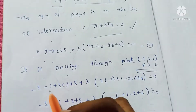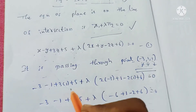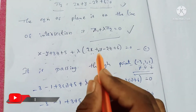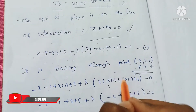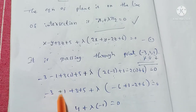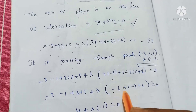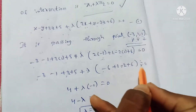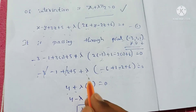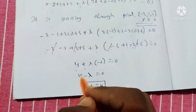Substituting the point minus 3, 1, 1 into plane 1: minus 3 minus 1 plus 3 plus 5, plus λ into plane 2: 2 times minus 3 plus 1 minus 2 plus 6 equals 0. This gives minus 6 plus 6 and minus 1 times minus 1, simplifying to 4 minus lambda equals 0.